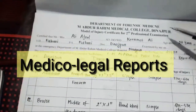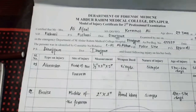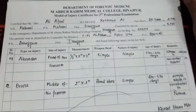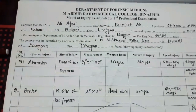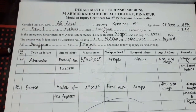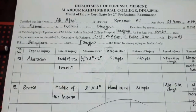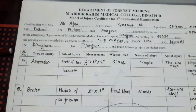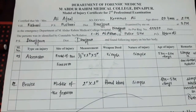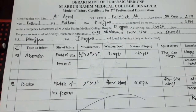First of all, what is evidence? Any legal means by which we have to prove or disprove any matter of fact. Evidence can be oral evidence or medical documentary evidence — including medical certificates, medical legal reports, dying declarations, and dying depositions.